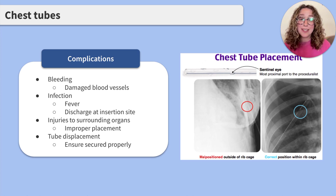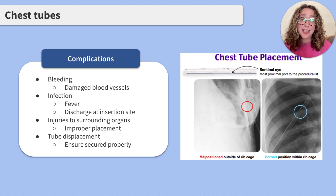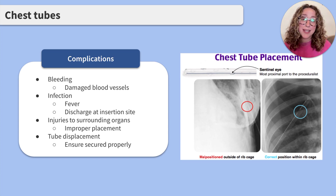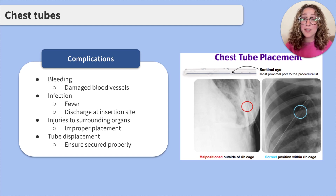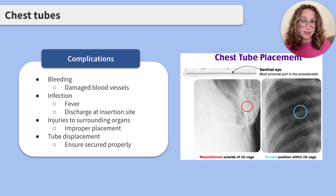While chest tubes are generally safe and effective, complications can include bleeding, infection, injuries to surrounding organs, and tube displacement. Bleeding can occur due to damaged blood vessels and should be managed and prevented through careful insertion and close monitoring. You'll watch for bleeding around the insertion site and in the drainage system. Infection can be prevented through the use of sterile technique. As a nurse, you should carefully watch for signs of infection including a fever and discharge at the insertion site.